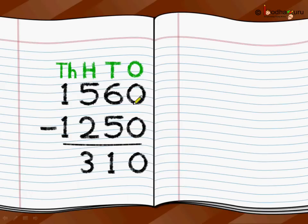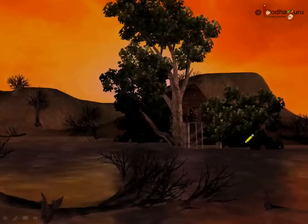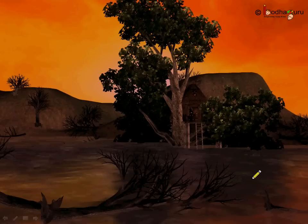One thousand five hundred and sixty trees were there originally, and one thousand two hundred and fifty trees that cruel witch cut to make her magic potion — like you saw in that science video. So only three hundred and ten trees were left in the jungle. As a result of this tree cutting, a huge flood came. The witch then realized her problem because trees are very important for the environment.